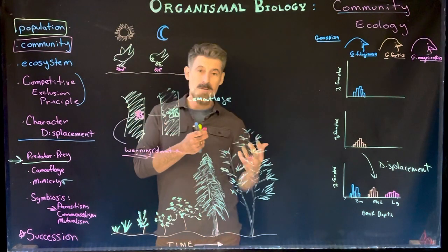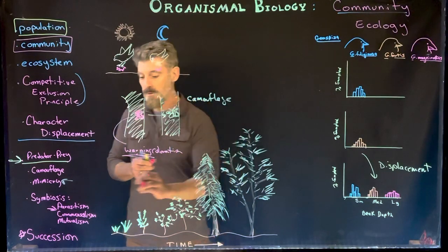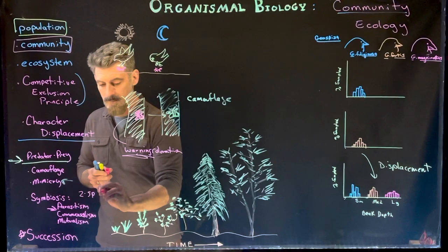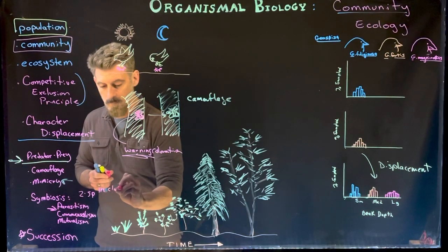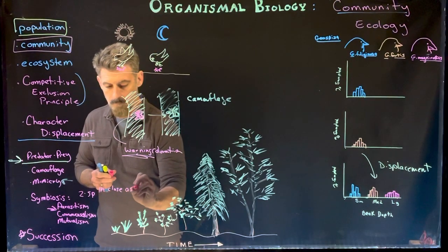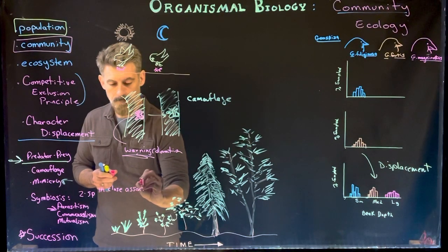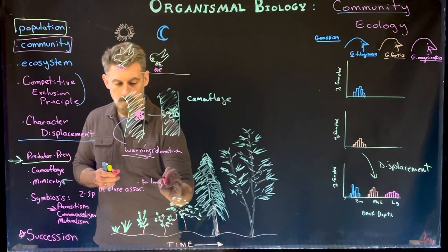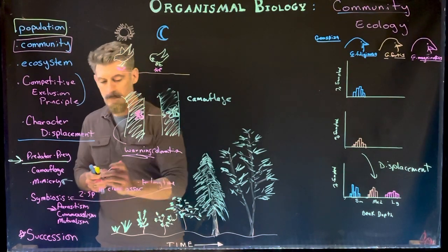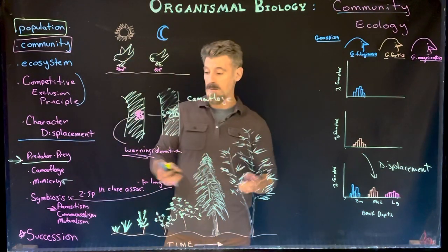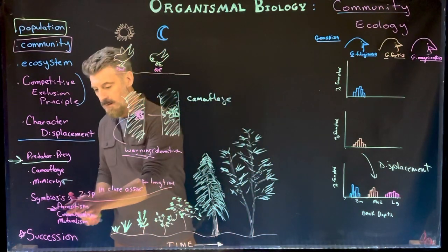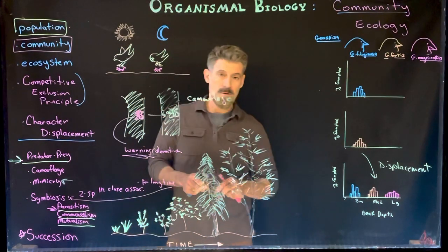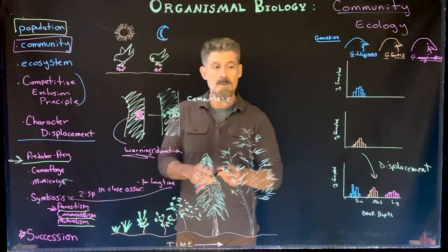Other types of interactions related to predation involve different types of symbiosis — where two species live together in close association for a long period of time. There are three categories: parasitism, commensalism, and mutualism.